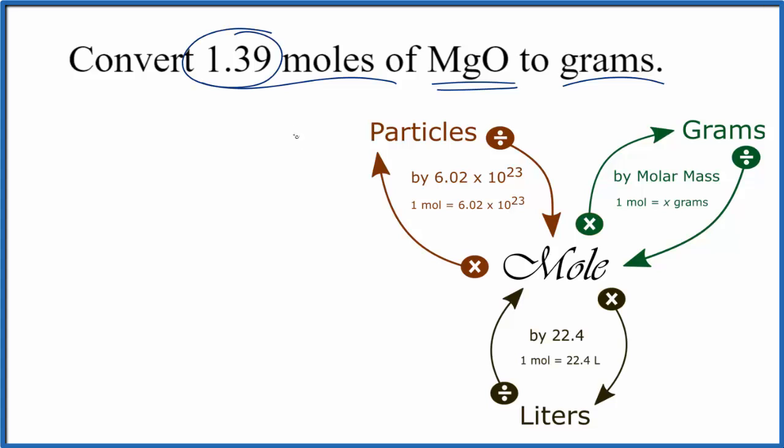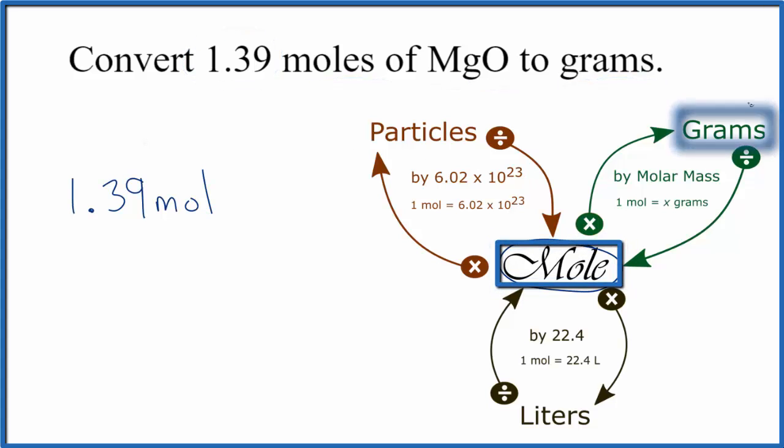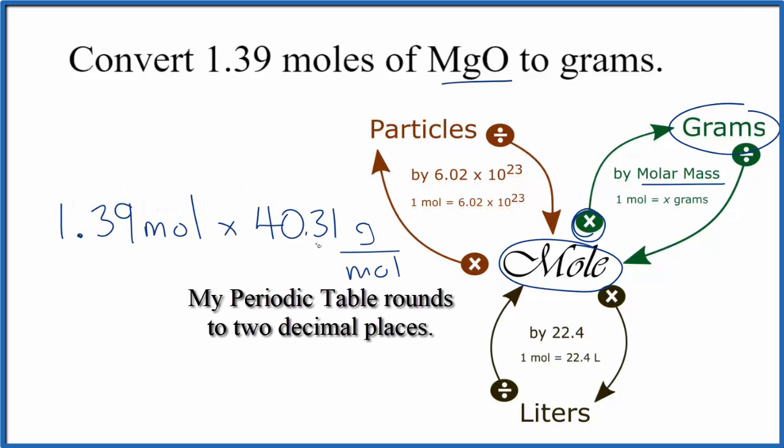In this 1.39 number, that's just something I made up for the problem. So we have our moles, and when we go from moles to grams, we're going to multiply by the molar mass. And we can find the molar mass for MgO by adding up the masses for each of these atoms. When we do that, we get 40.31 grams per mole.